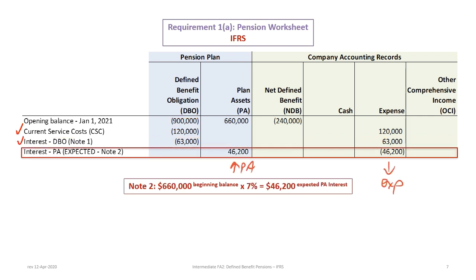Once we have the current service costs and the interest on the DBO, we look at the interest on the plan assets. In the pension worksheet, we include the expected interest, not the actual. We take the beginning balance of the plan assets of $660,000, multiply by 7%, and that gives us $46,200 expected interest. We debit that to the plan assets, increasing the balance of plan assets. The credit goes to offset the expense — it doesn't go to revenue, it goes as an offset to the pension expense.